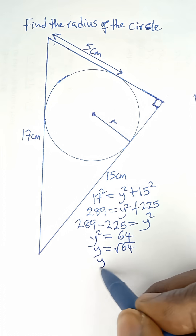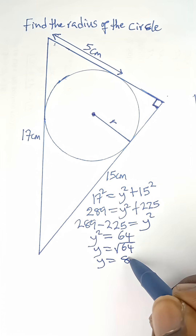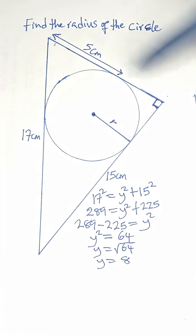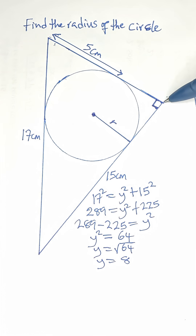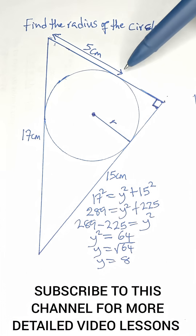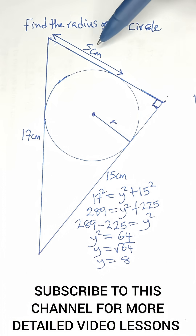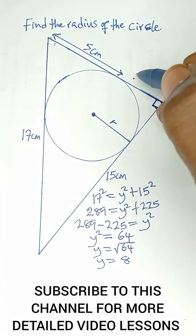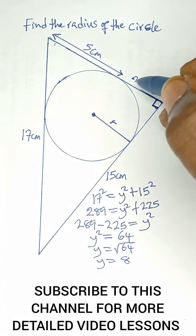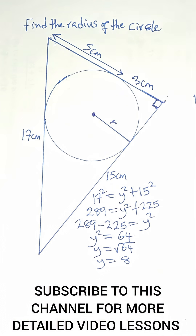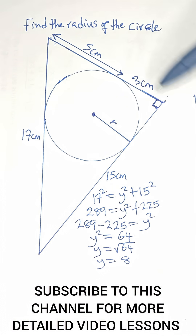That gives y a value of 8, so the full length from here to here is 8 centimeters. Since this part is 5, the remaining portion is 8 minus 5, which equals 3. So this remaining part is 3 centimeters.